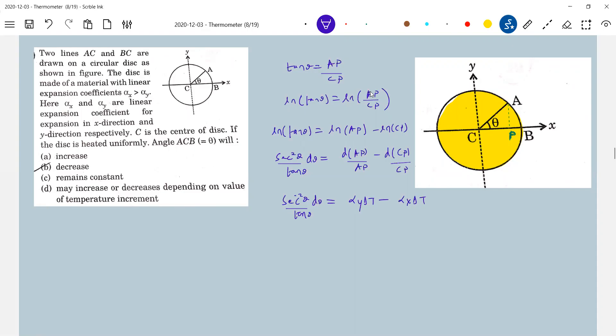We do write like this: derivative of AP should be equal to AP into alpha x into delta t. Delta l is equal to l alpha delta t. The delta l is what? Change in length.